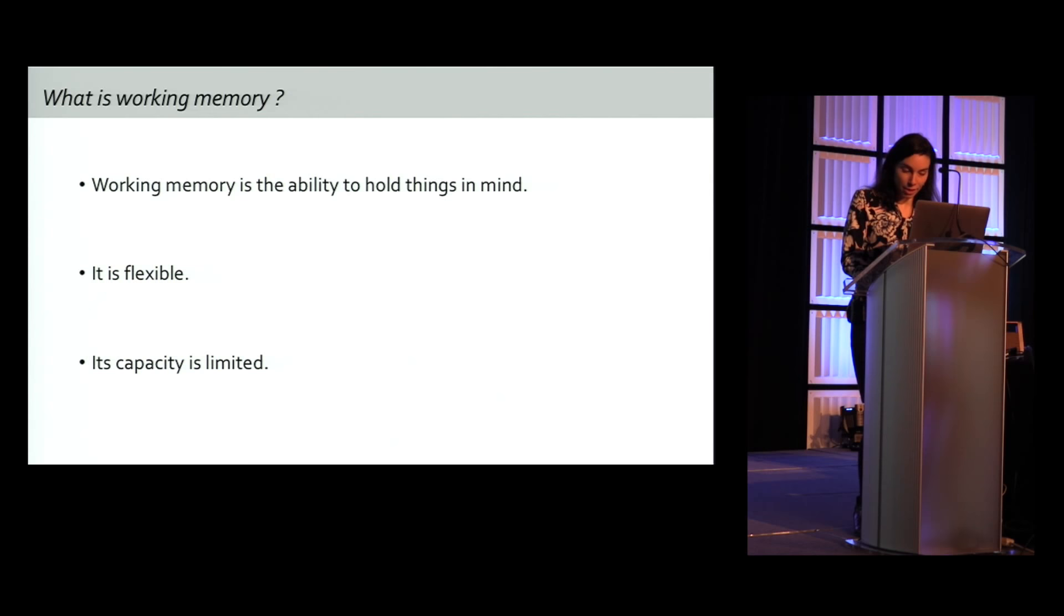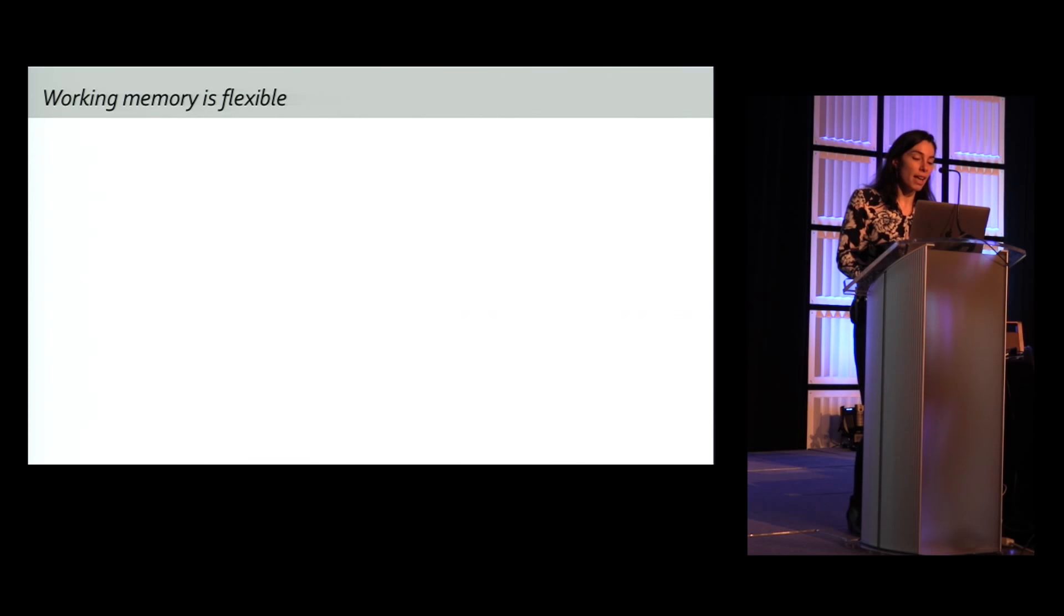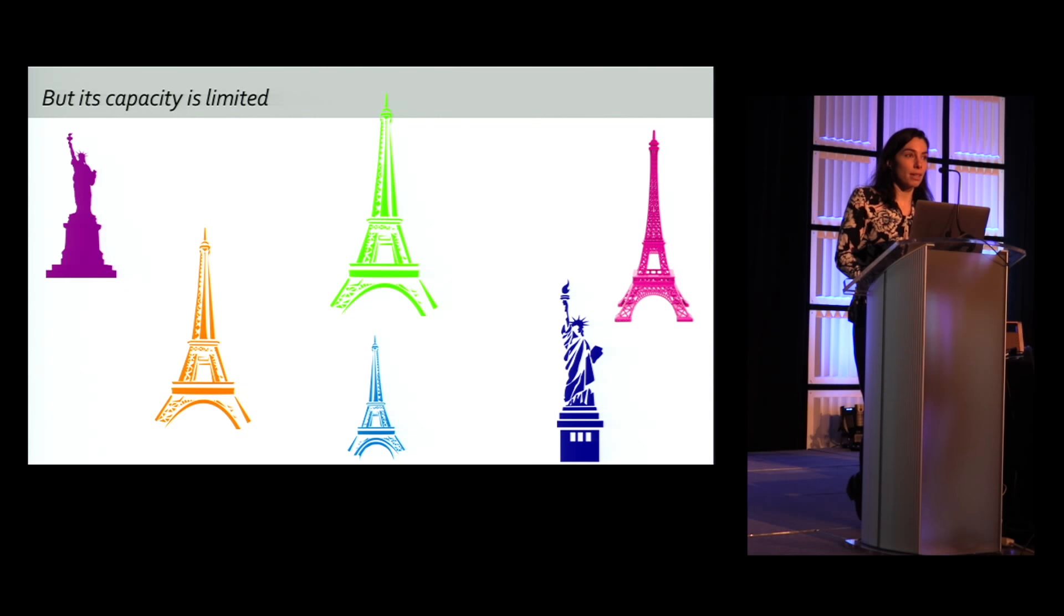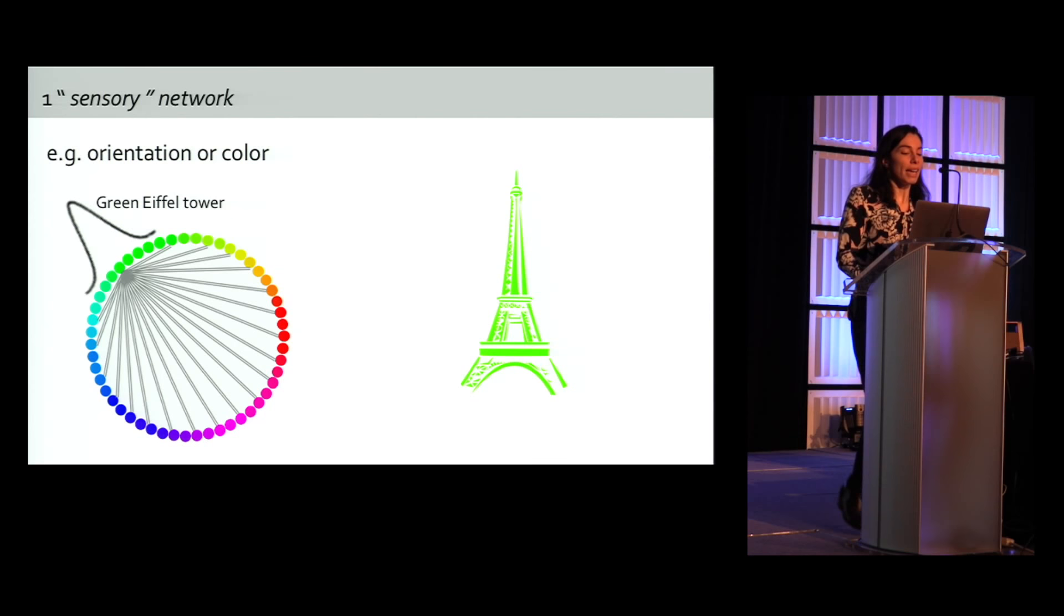Let me give you an example. If I show you these items on a screen for a few hundreds of milliseconds, and then nothing for a few seconds called the delay period. Now, not only are you able to remember that it was a pink Eiffel Tower, but also that it was at the center of the screen, even though you had never seen a pink Eiffel Tower before. Working memory is flexible. We can have anything in mind for a few seconds from the first experience and without any learning involved. If I now show you three items on the screen, you'll still be able to tell the color and location of each of them. Things get a little bit harder above four items. Working memory is flexible, but its capacity is limited.